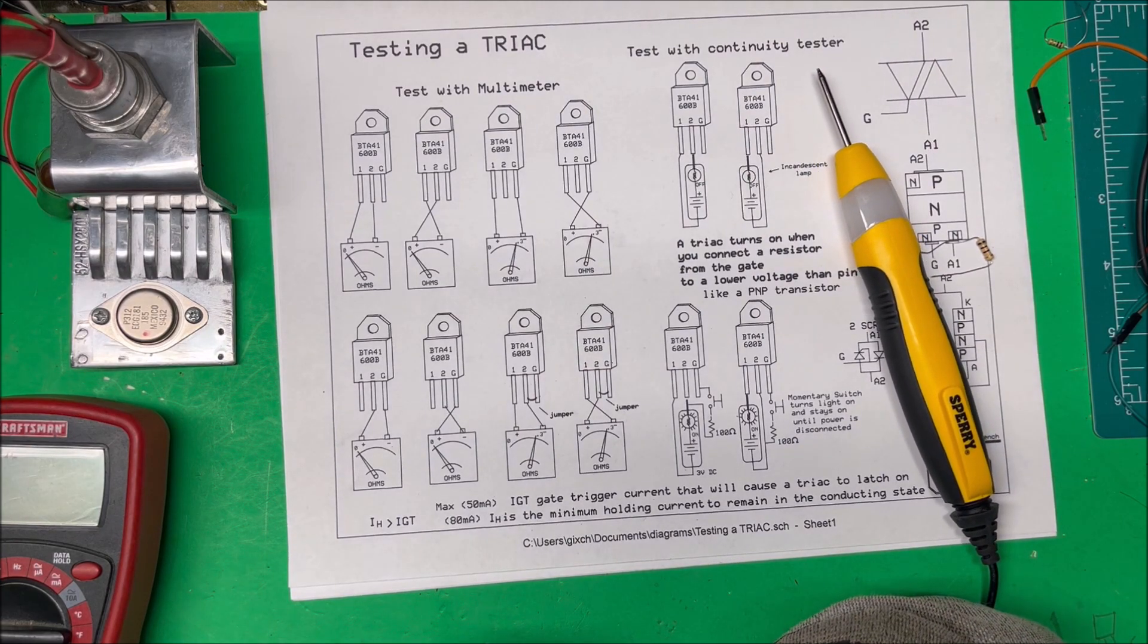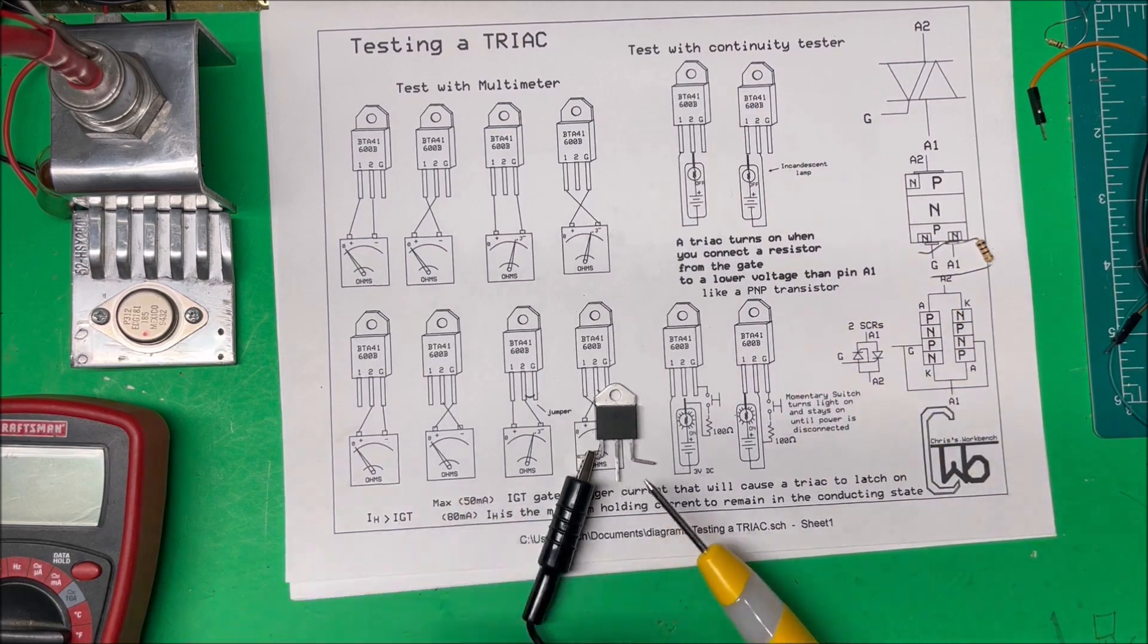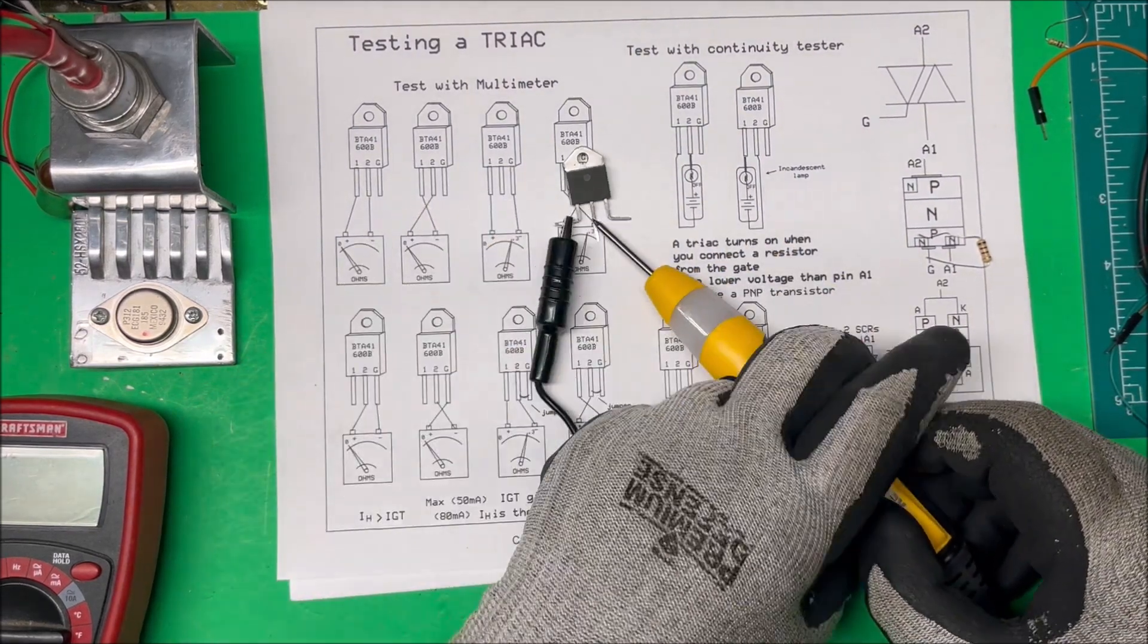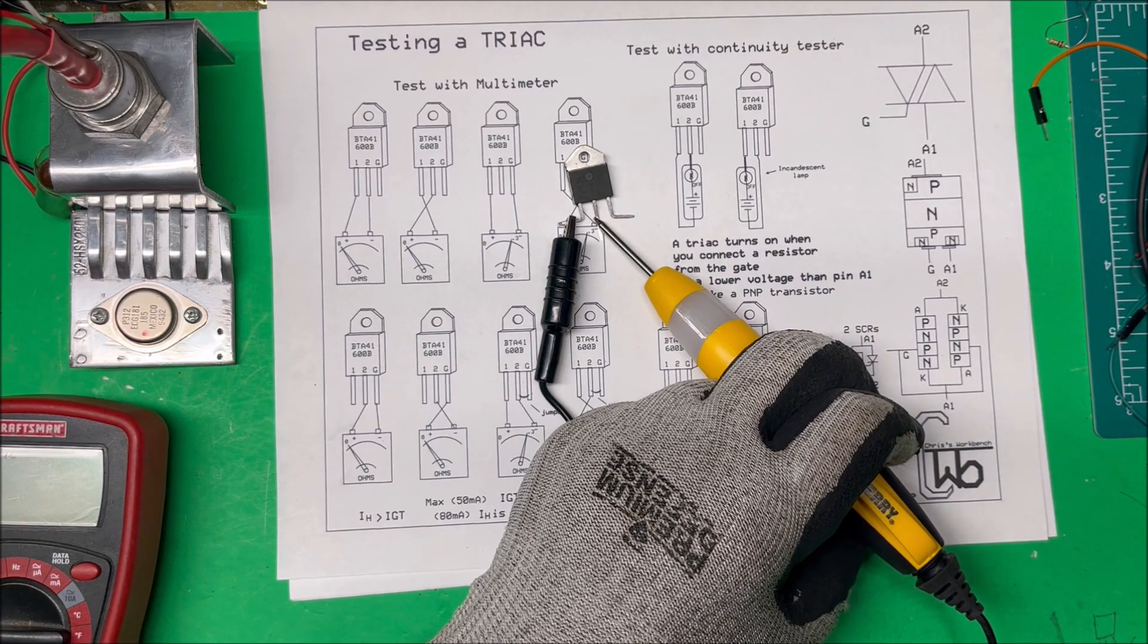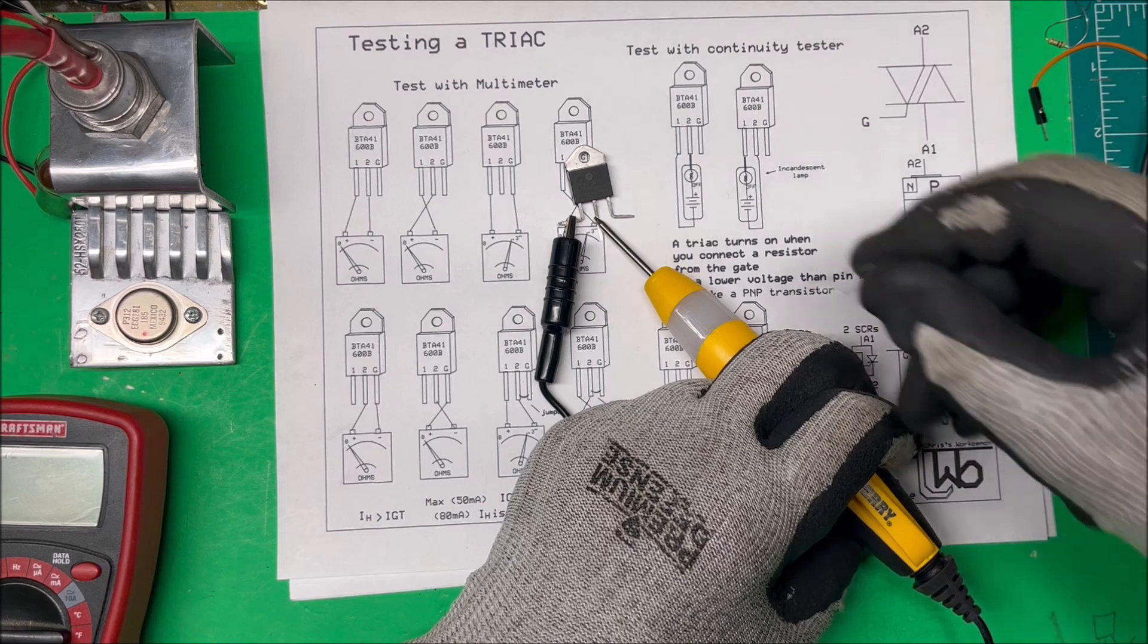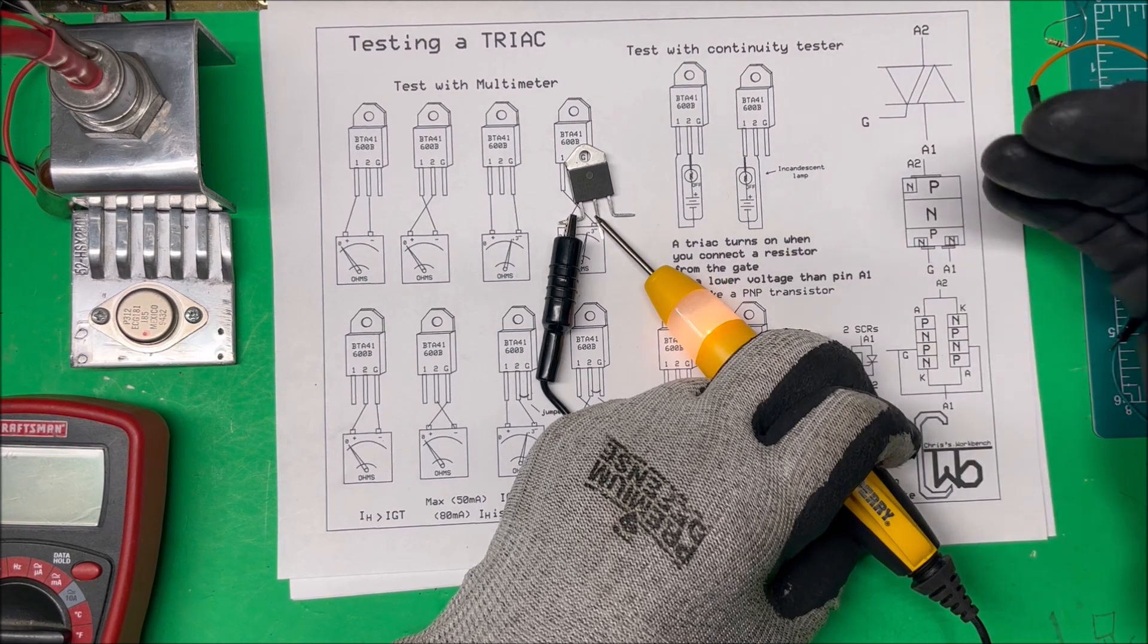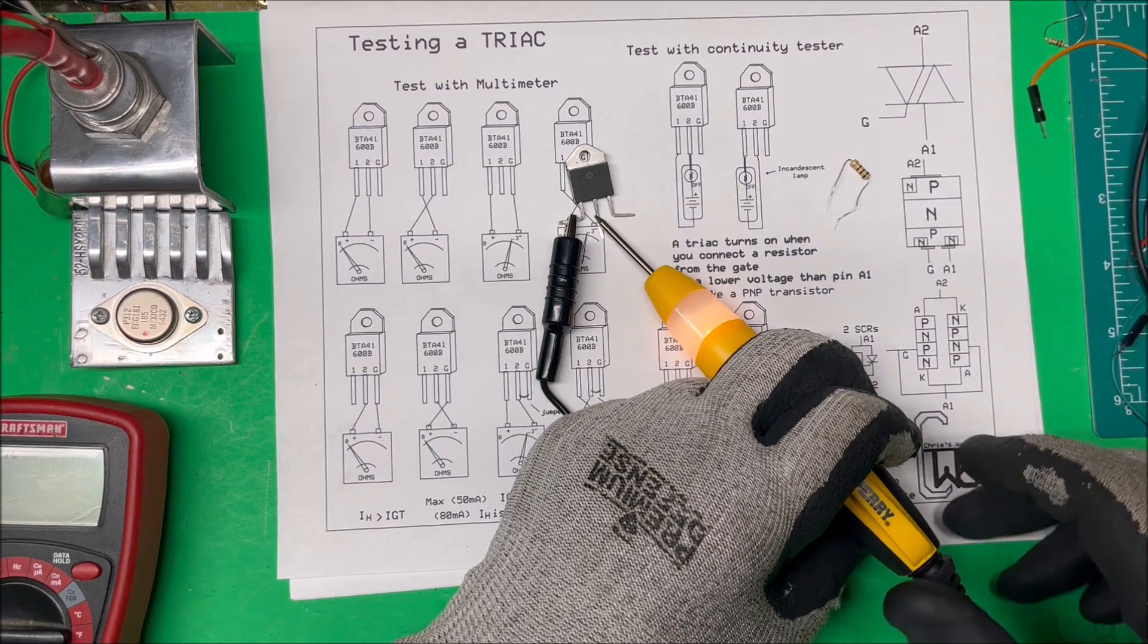Let's do it this way: let's go from pin 1 to pin 2. And then I'm going to take a 100-ohm resistor and put it across there between pin 2 and the gate. Remove the pin and it's on—the light's on, it latched on. So we know that thing's working.